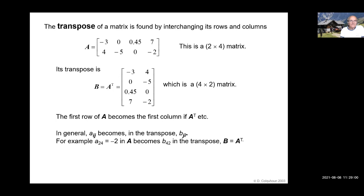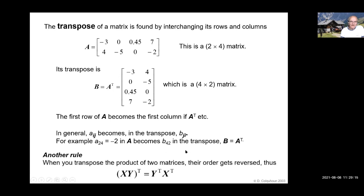For example, A₂₄, which is minus two in A, becomes B₄₂ in the transpose. There's another useful rule: if you transpose the product of two matrices, their order gets reversed. What we mean by the product of two matrices will come soon.